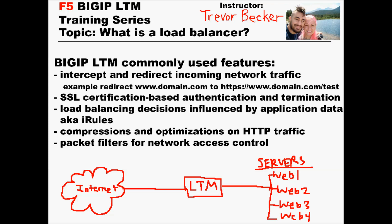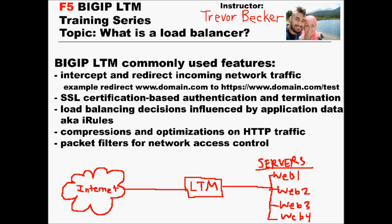The Big IP LTM can inspect application data and make load balancing decisions based off of that data. For example, if you want all of your iPad users or Mozilla Firefox users to go to one specific server, the LTM can do that through the use of iRules. iRules are like magic — you can literally do anything with them. The Big IP LTM system can also do compressions and optimizations on your HTTP traffic to maximize your web performance.